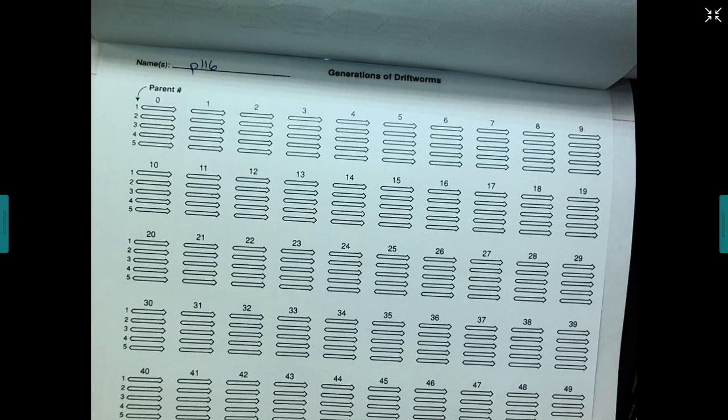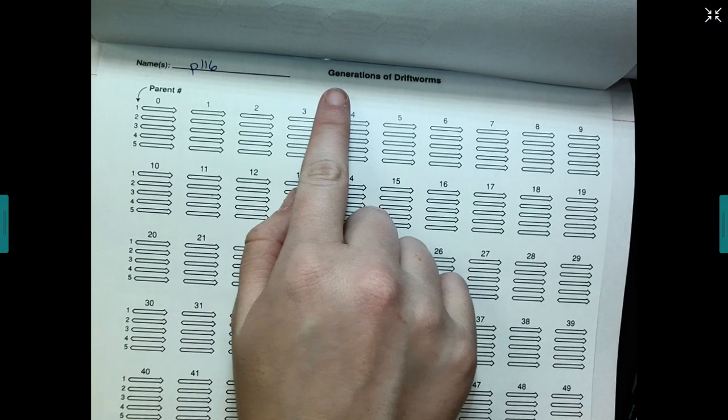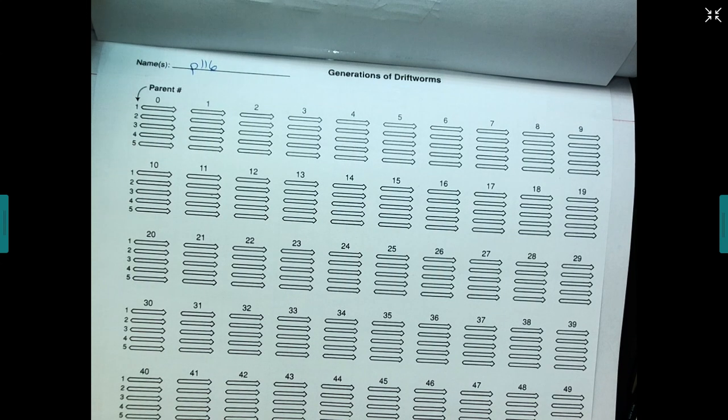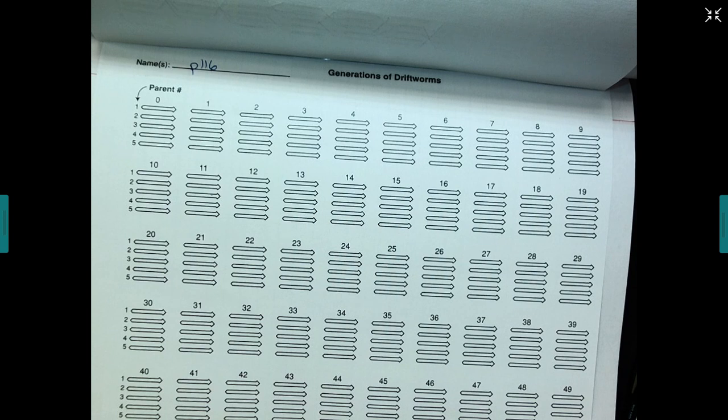Hey there. So today we're going to fill in our generations of drift worm activity. In this activity, we're going to take a look at exactly how genetic drift works. So remember from our notes, we said that genetic drift is basically the random process of traits or genes being passed on to the next generation. Genetic drift is random selection.